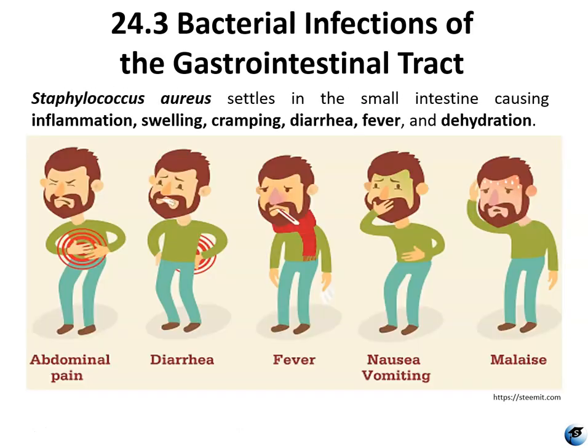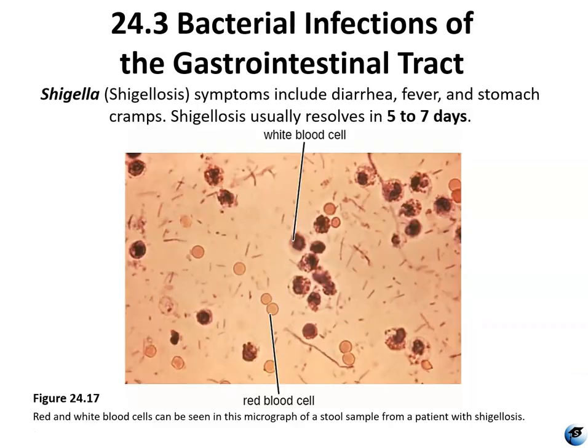Staph aureus settles into the small intestine. Many of these foodborne illnesses cause similar symptoms including inflammation, swelling, cramping, diarrhea, dehydration, fever, malaise, nausea, and vomiting. Shigella symptoms include diarrhea, fever, and stomach cramps, and this food poisoning usually resolves in about a week either with or without antibiotic treatment. Figure 24.17 shows red and white blood cells in a stool sample from a patient with shigellosis, and the increased prevalence of white blood cells is very indicative of a bacterial infection.